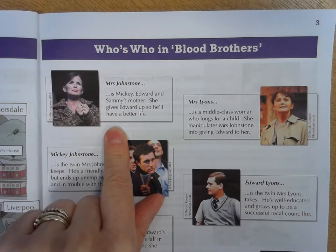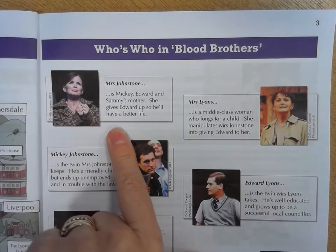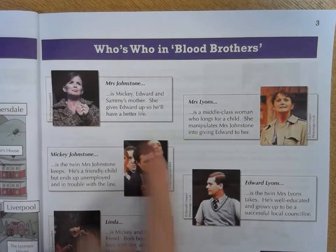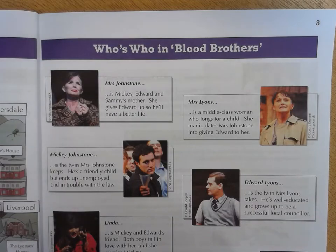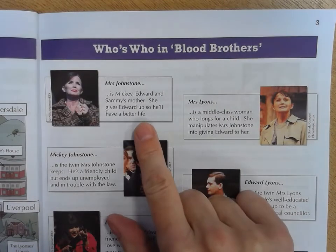She had lots and lots of children and couldn't afford to keep them all because her husband left her. There was that threat about the social services taking her kids away if she couldn't afford to keep them. Then she got pregnant with twins, and that forced her to give away one of them so that she was able to keep all of the others.